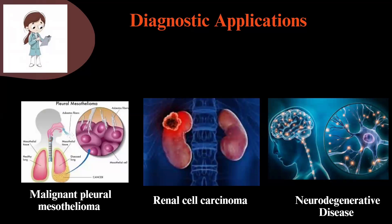Diagnostic applications of glutathione peroxidase: it acts as a potential biomarker in malignant pleural mesothelioma. Altered gene expression is observed in malignant pleural mesothelioma tissue and pleural effusion. Elevated glutathione peroxidase levels are correlated with tumor progression and poor prognosis.